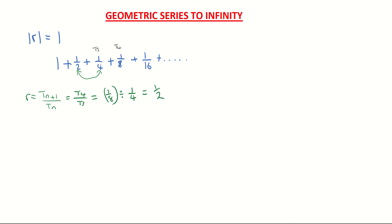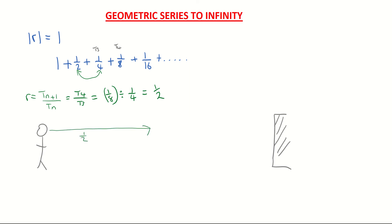To picture this sequence, imagine you're standing at the front of a room and there's a wall at the back. To get to the back, you first go halfway, then halfway to there — which is a quarter of the distance — then halfway again, which is one eighth, then one sixteenth, then one thirty-second, continuing to get smaller and smaller.